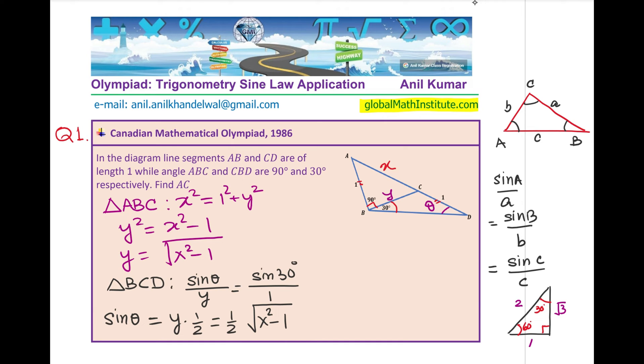So, we do have now a relation which relates sin theta with the side BC. Sine theta can also be related in a bigger triangle. So, now, let us consider the bigger triangle which is triangle ABD. This is an obtuse angle triangle with 90 plus 30, 120 degrees angle at B. We can now again apply sine law.